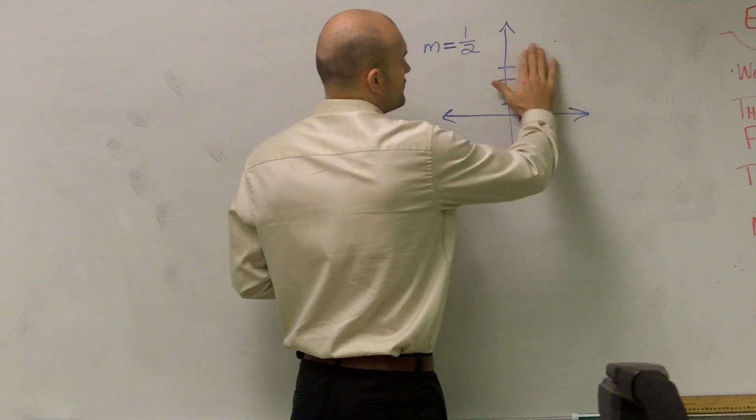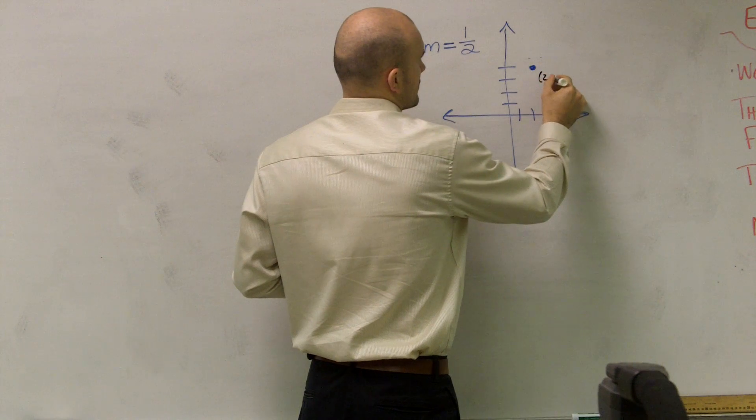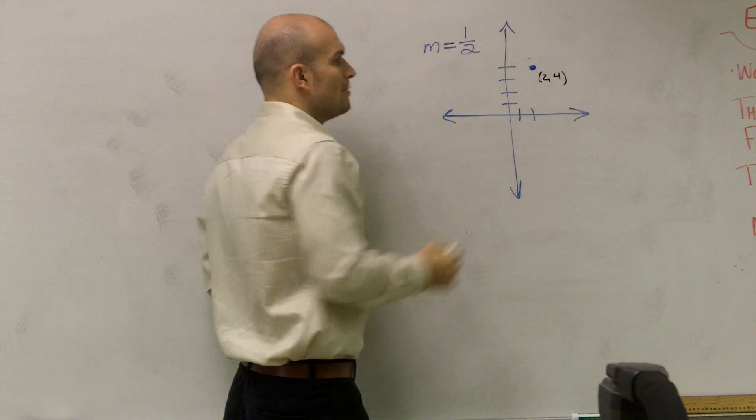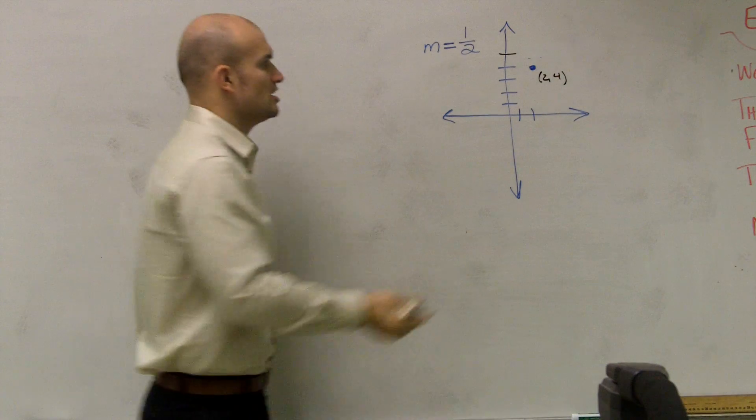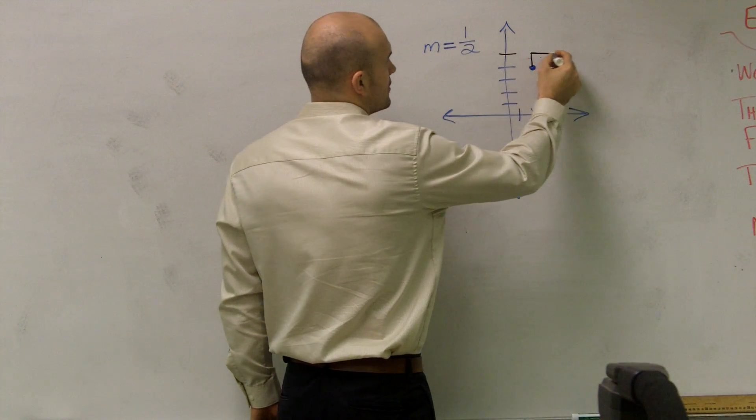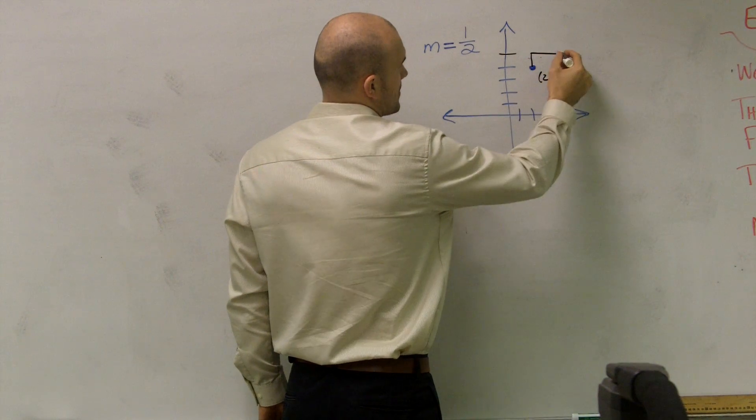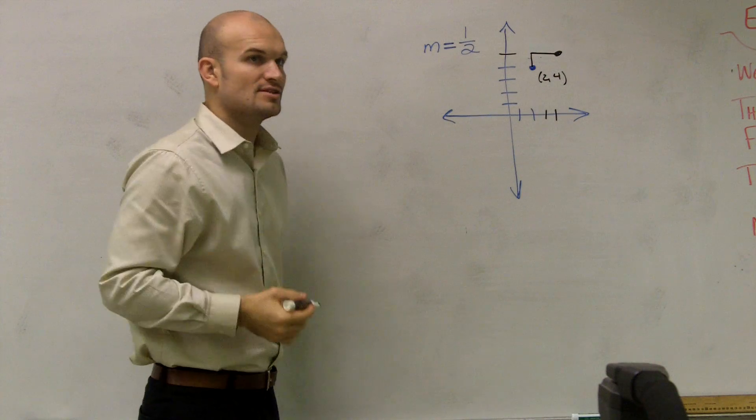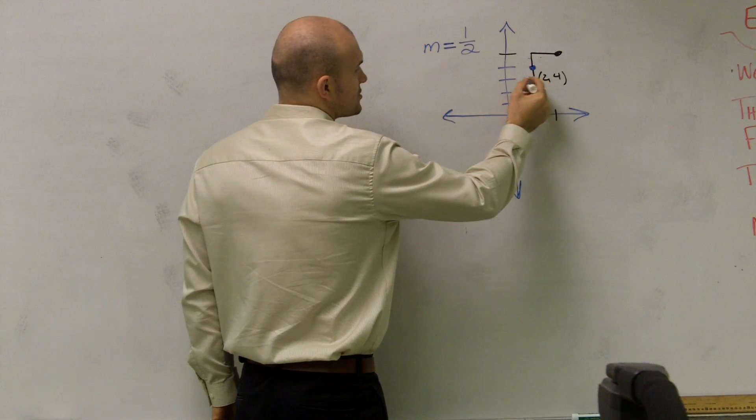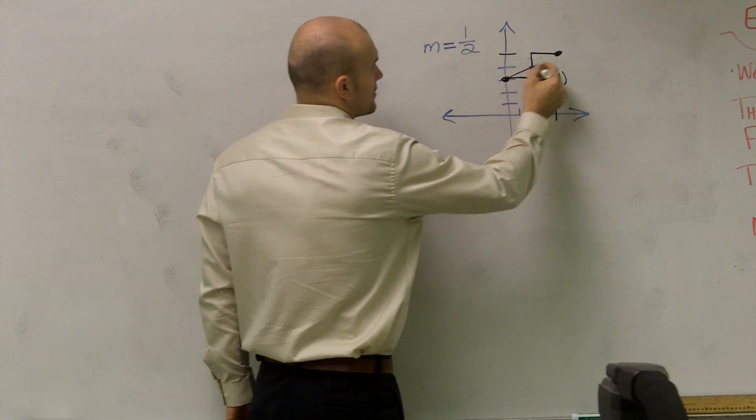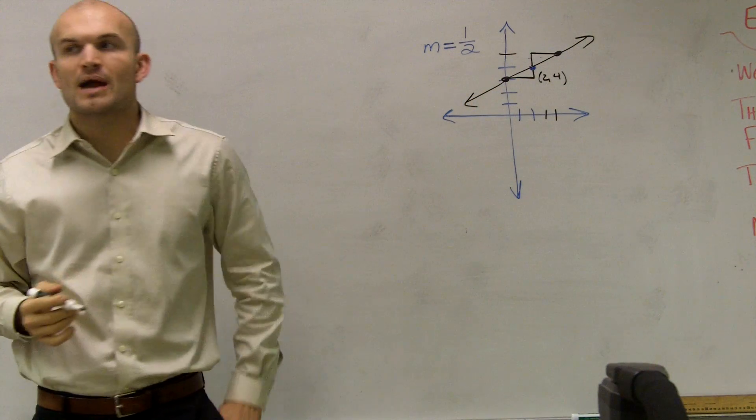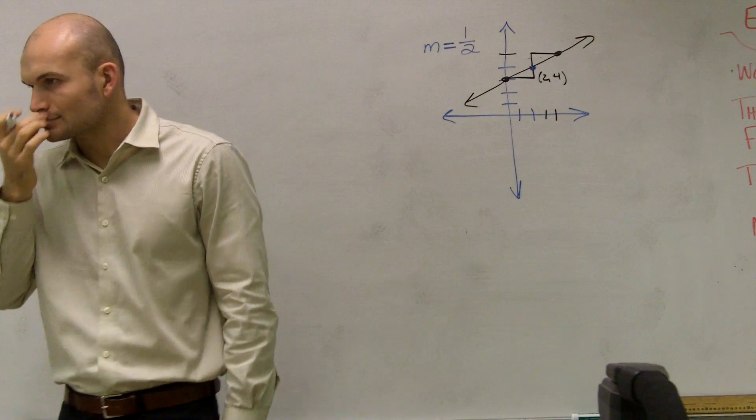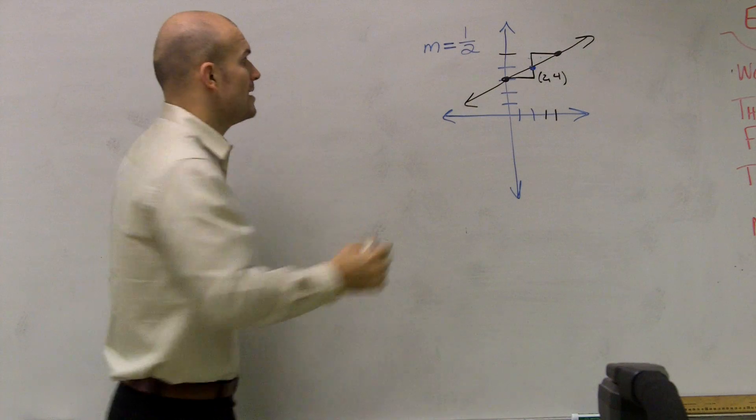So if I was given my point (2, 4), and I know my slope is 1 over 2, that tells me I can go up 1 over 2 units. It also tells me I can go down 1 to the left 2 units. And therefore, I can graph my line. Now the reason why I might want to graph it is because I need to know.